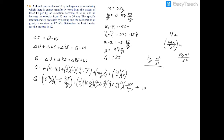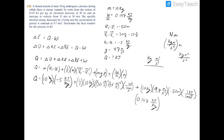For potential energy, we have 10 kilograms times 9.7 meters per second squared times negative 50 meters. The units are again kilogram meter squared per second squared, which is joules, so we divide by 1,000 to get kilojoules. Finally, work equals 0.147 kilojoules per kilogram times 10 kilograms — the kilograms cancel leaving kilojoules. Plugging everything into the calculator, the heat transfer Q equals negative 50.005 kilojoules.